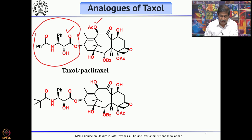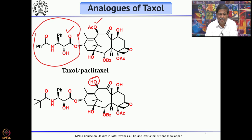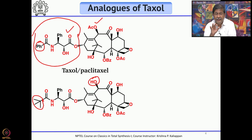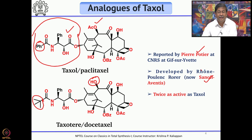Potier made a derivative of Taxol with two changes: there is no OAc group — a free hydroxyl improves solubility — and in the side chain a tert-butyl group replaces the phenyl group of Taxol. This analogue is called Taxotere or docetaxel, reported by Pierre Potier from CNRS, and later licensed to the company now called Sanofi-Aventis. This analogue turned out to be two times more potent than Taxol.